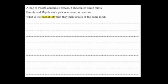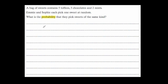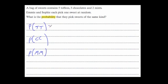In this exam question, a bag of sweets contains five toffees, three chocolates, and two mints. Emmy and Sophie each pick one sweet at random without replacement. What is the probability they pick sweets of the same kind? That means we need the probability of toffee-toffee, or chocolate-chocolate, or mint-mint.